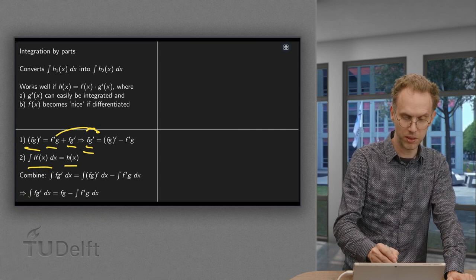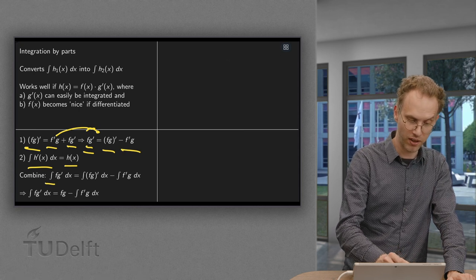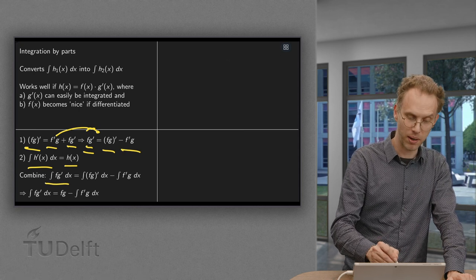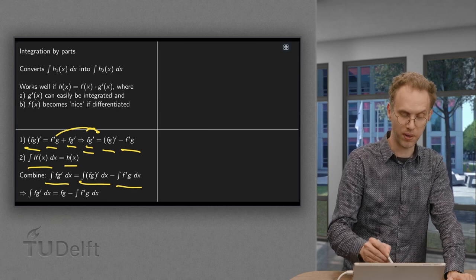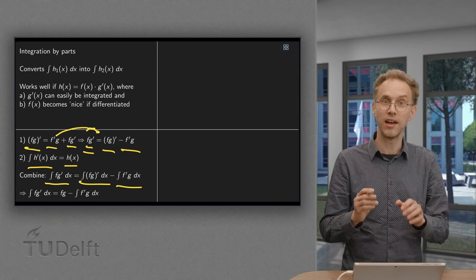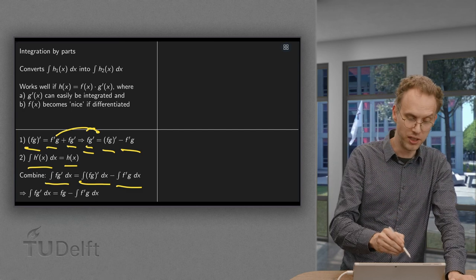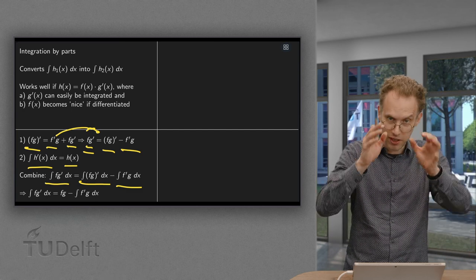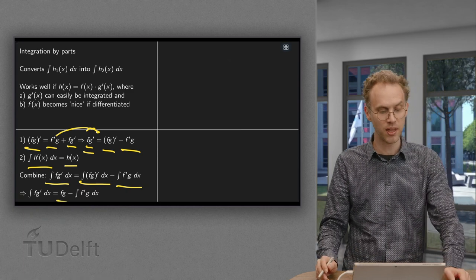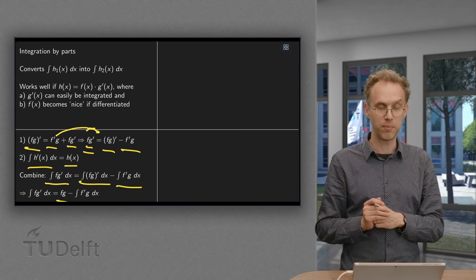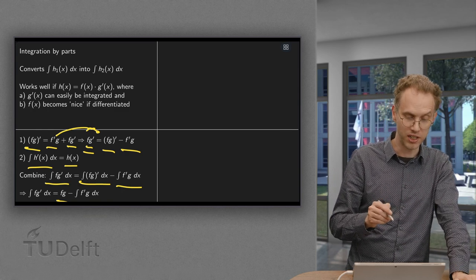Now we combine by integrating both sides. We integrate f times g prime, and we integrate the right-hand side term by term. We get: the integral of f times g prime equals the integral of (fg) prime minus the integral of f prime times g. The integral of (fg) prime is simply f times g. So the formula becomes: the integral of f times g prime equals f times g minus the integral of f prime times g.